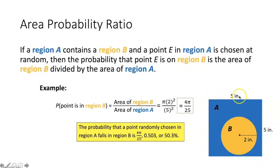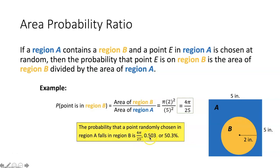The area of region A is a square, so that would be the length of one side squared. We end up getting that the probability is 4 pi over 25. If you divide that on a calculator and write it as a decimal, it's 0.503. If you write that probability as a percent, take 0.503 times 100 to get 50.3%.